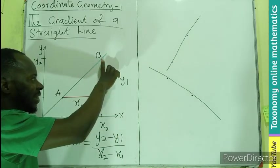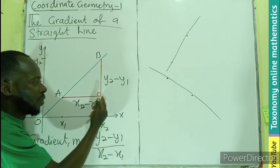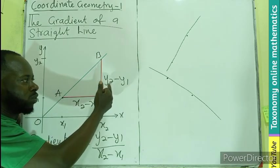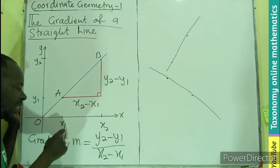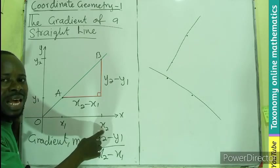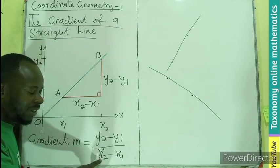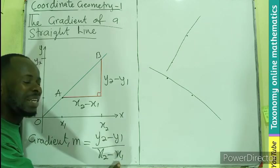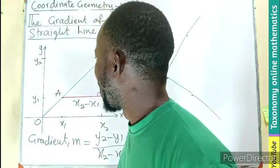We could also say that the distance here could mean the movement from y1 to y2. We could also have it as y1 minus y2, and in the same way x1 minus x2. So if you are using the second y, the second x must be used. But if you use the first y, then the first x must also be used. This is how the gradient will be derived.